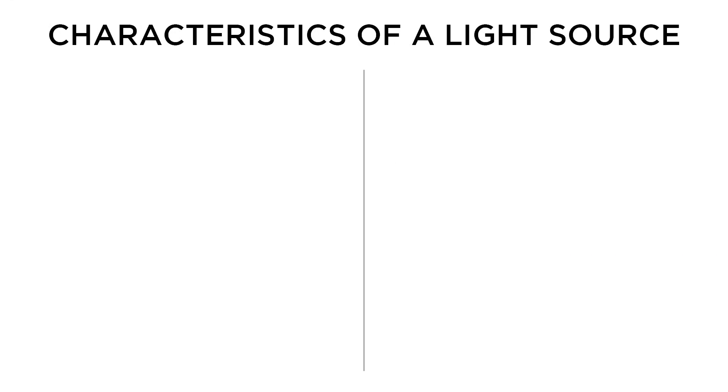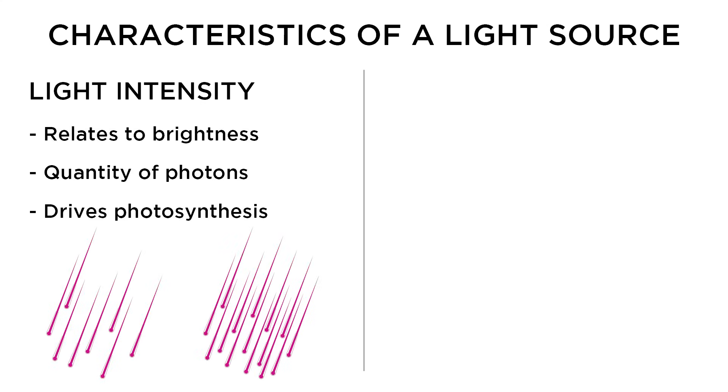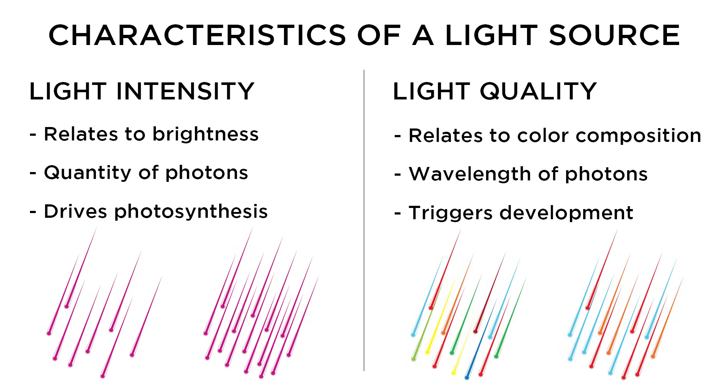When looking at the characteristics of a light source, we can focus on two crucial aspects. First, there is light intensity, which refers to how bright a light is. This relates to the photon density. Secondly, there's light quality, which is also important. This refers to the composition of light, how much red is emitted in relation to blues, greens, or any other color.